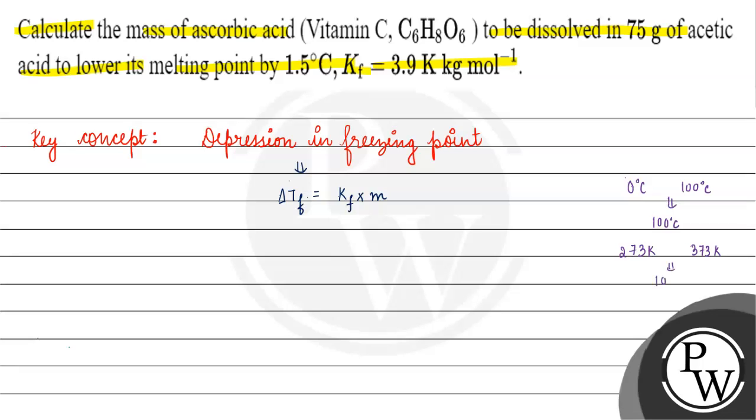This is why the difference can be written in degrees Celsius or Kelvin equivalently. So ΔTf = 1.5 Kelvin = Kf × m.